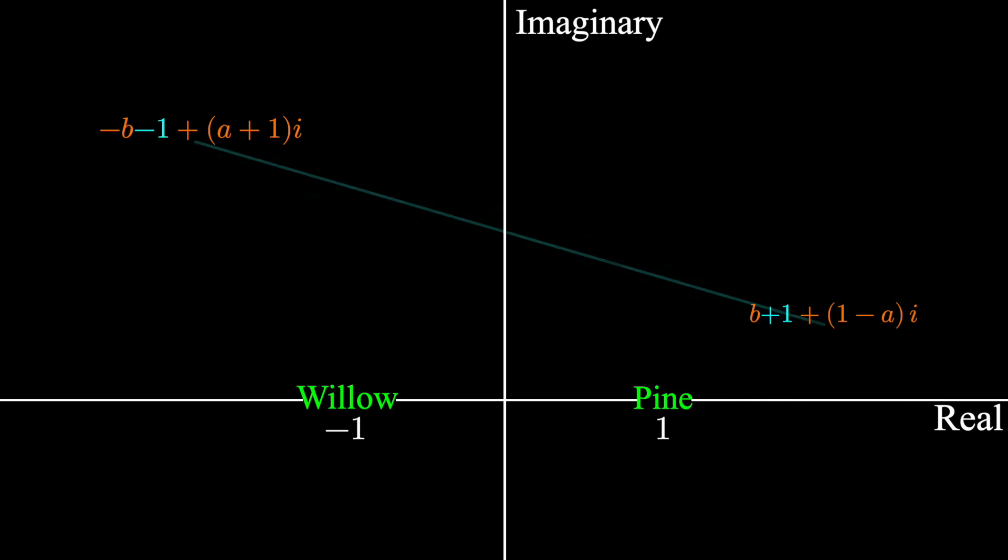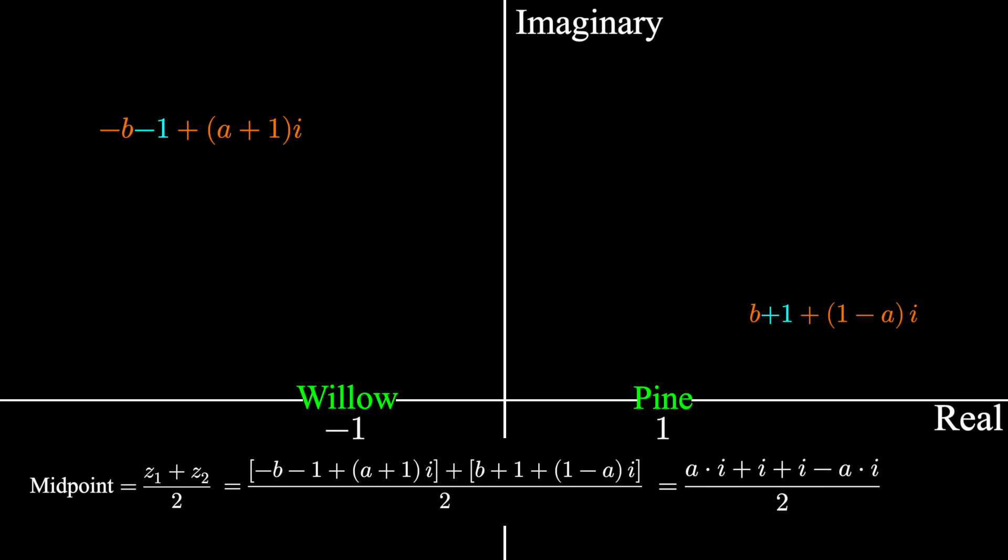We can find the midpoint by adding the two complex numbers and dividing by two. After a bit of algebra, we see a and b magically canceling out. That is, the position of the shed didn't matter, and the treasure will be located at positive i in our complex plane.